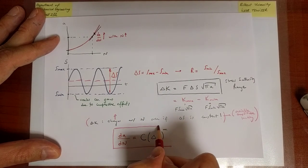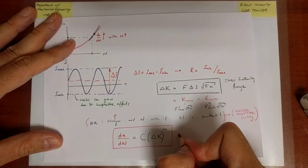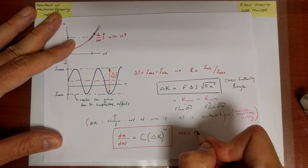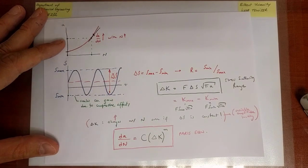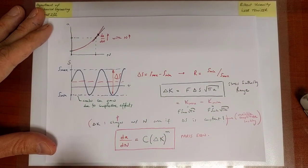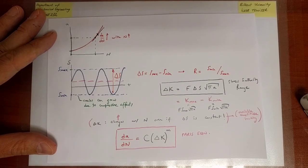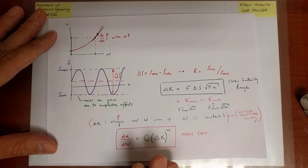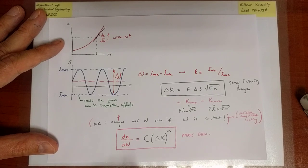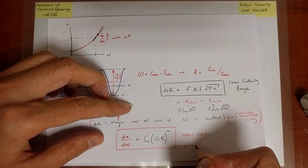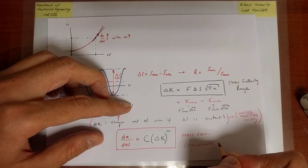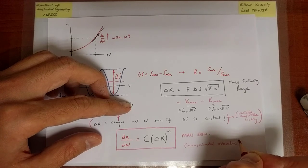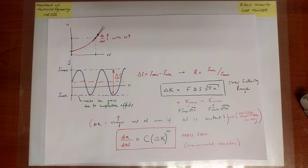This is called the Paris equation. It appears to be the simplest possible model that captures the physics of the problem. It is also heavily experimentally validated: experimental observations confirm that within a certain range of delta K — or equivalently crack growth rate — this is a very good model to use. That is what we are going to discuss in more detail next.